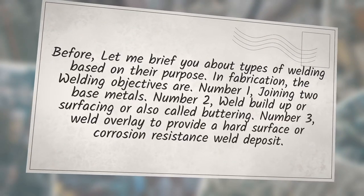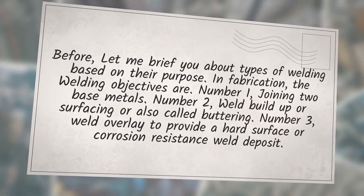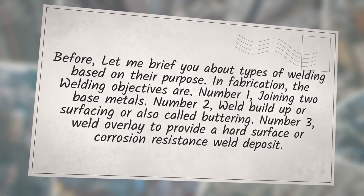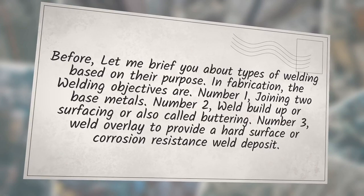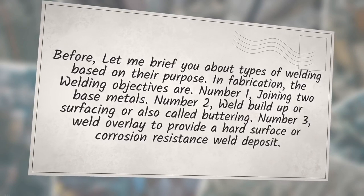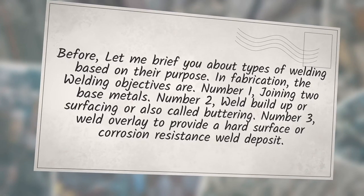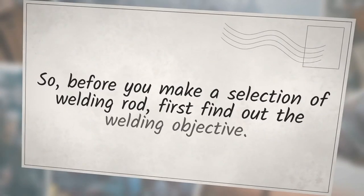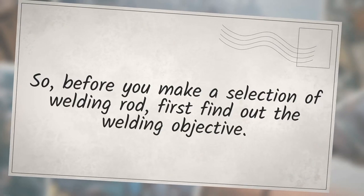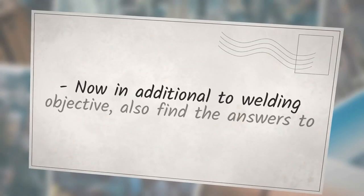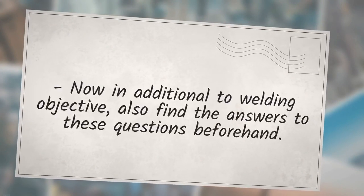In fabrication, the welding objectives are: number one, joining two base metals; number two, weld build-up or surfacing, also called buttering; number three, weld overlay to provide a hard surface or corrosion resistance weld deposit. Before you make a selection of welding rod, first find out the welding objective.